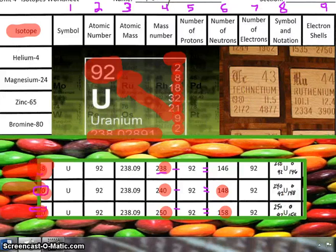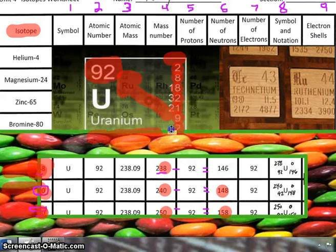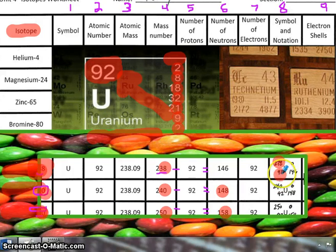Okay, symbol notation. So you don't have to worry too much about that, but in case you're curious, the top left, that's the mass number. Bottom left, atomic number. Upper right, that's the charge, which in this case, they're all zero. And then bottom right, neutrons. And in the middle, the symbol.